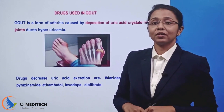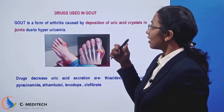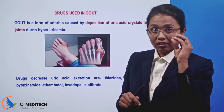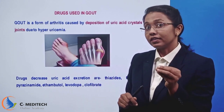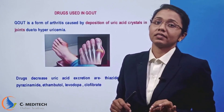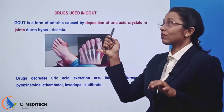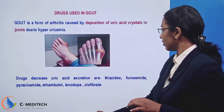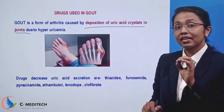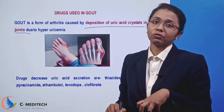Hi friends, we are going to talk about gout related to drugs. Gout is a form of arthritis which is caused by deposition of uric acid crystals in joints. That is why it is caused by hyperuricemia.